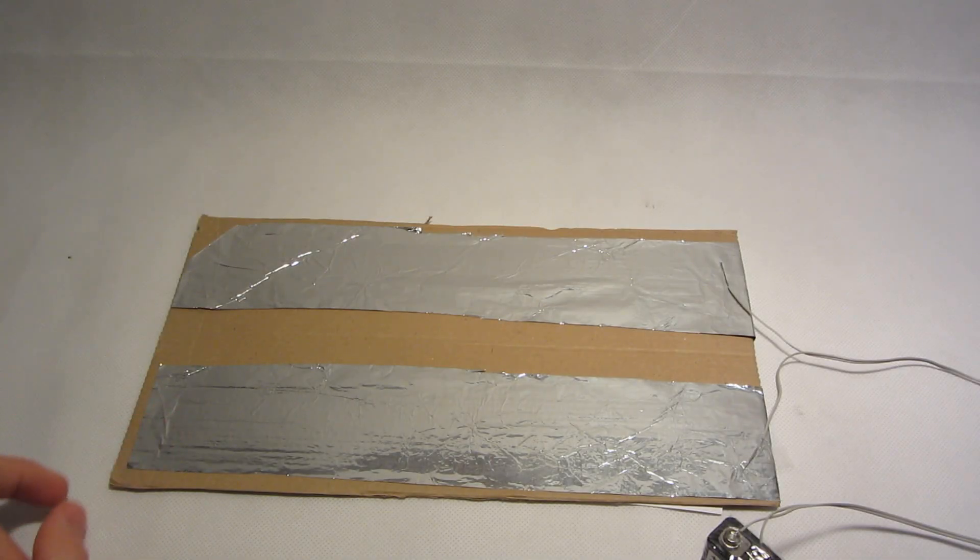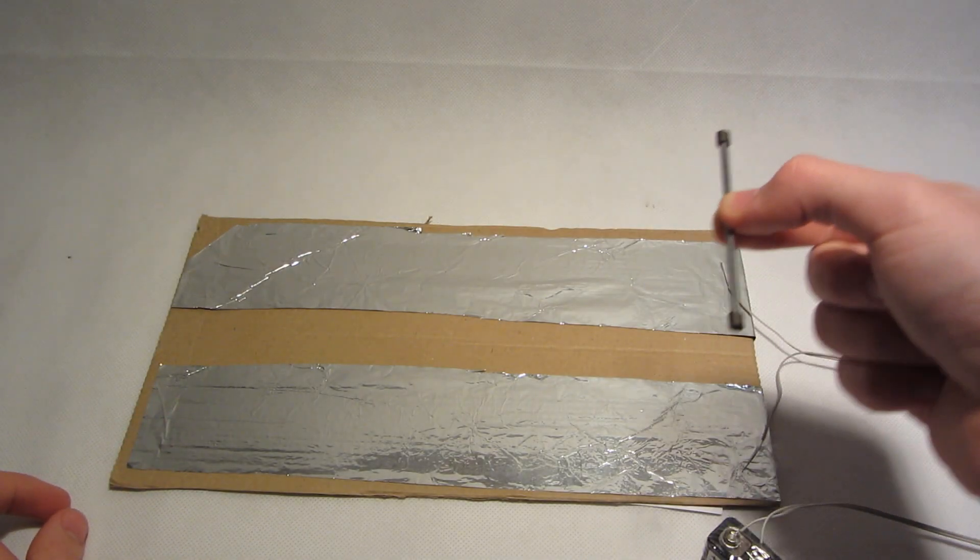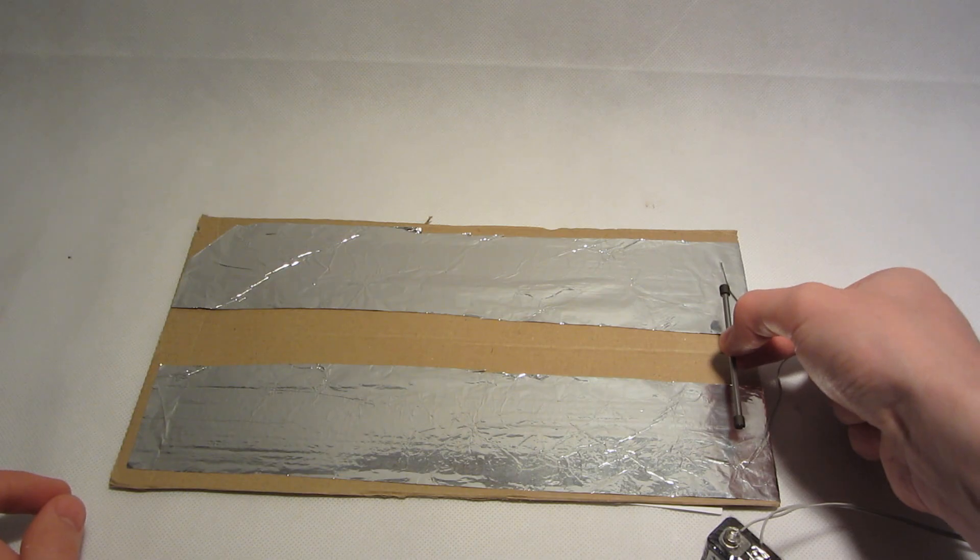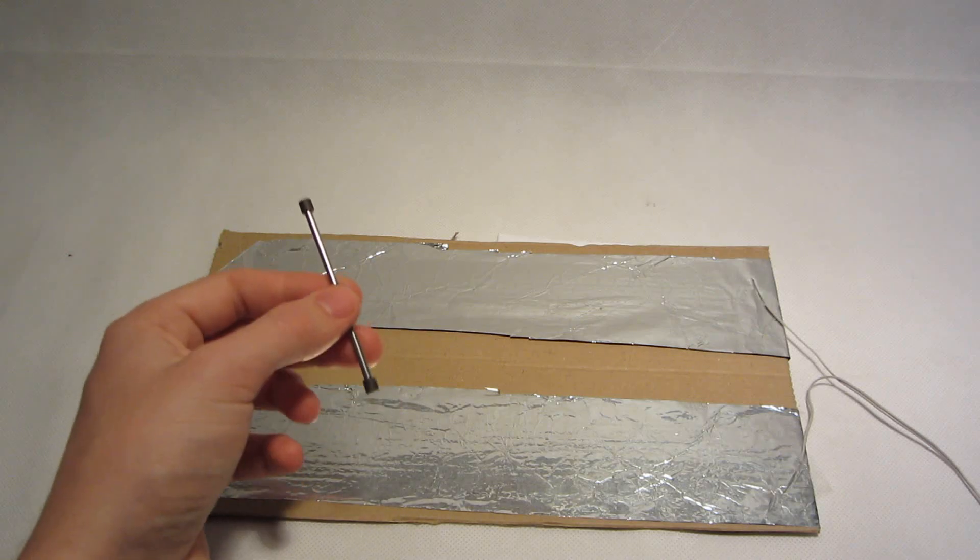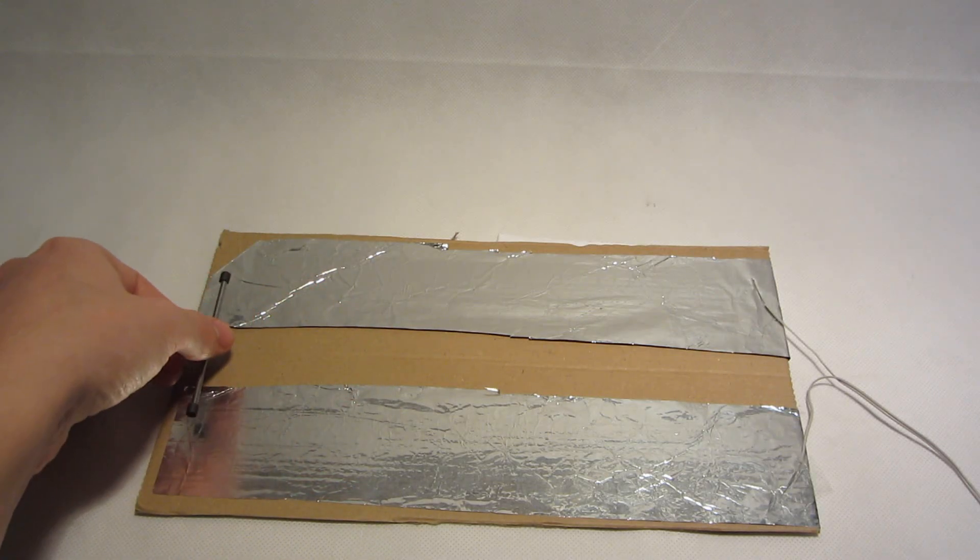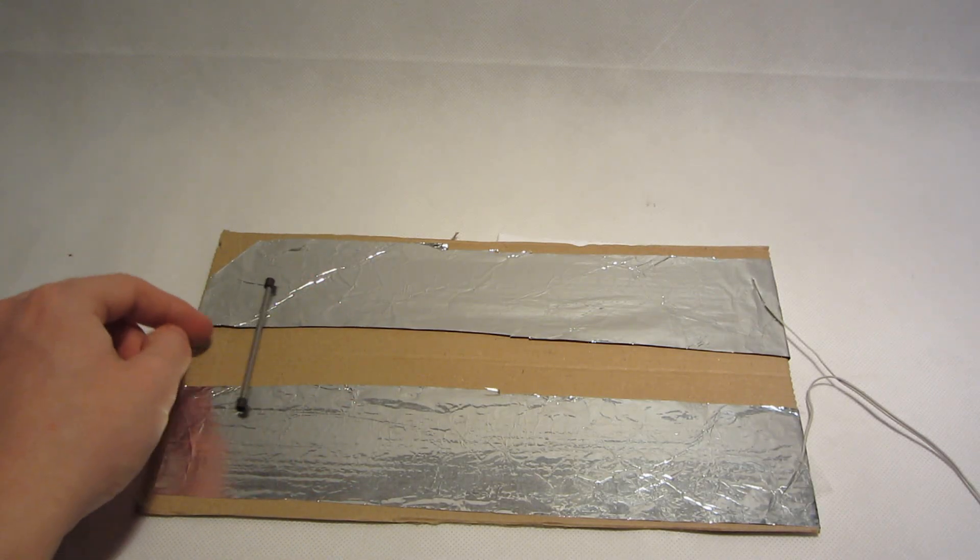And now our railgun is ready for launch. Take the projectile and place it on the rails. By reversing the magnets, you are also reversing the direction.